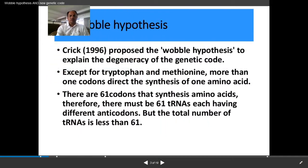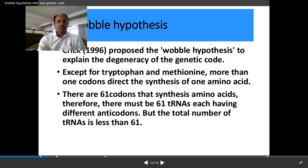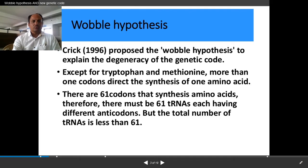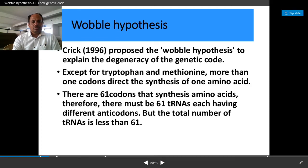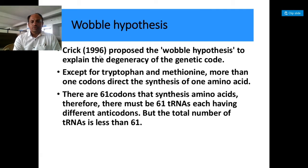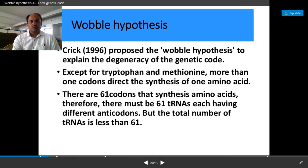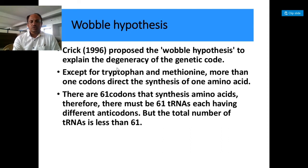What is meant by this wobble hypothesis that we are going to see here? In the last lecture, we already started the properties of the genetic code. So what is this wobble hypothesis? Now, in 1966, Crick proposed this wobble hypothesis to explain the degeneracy of a genetic code. Yesterday we have studied what is meant by this degeneracy of a genetic code.